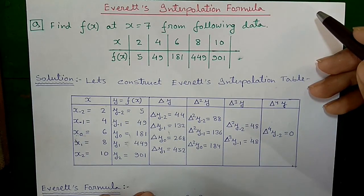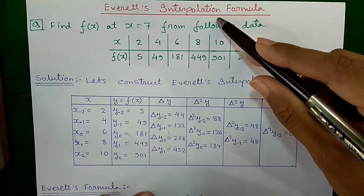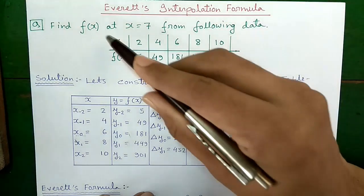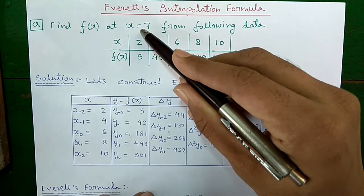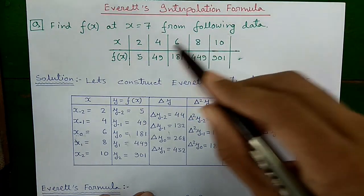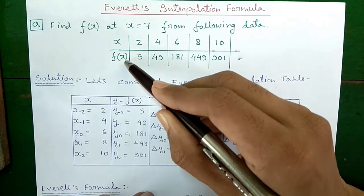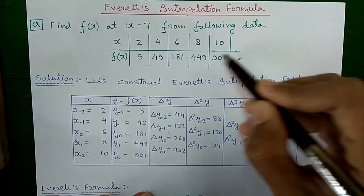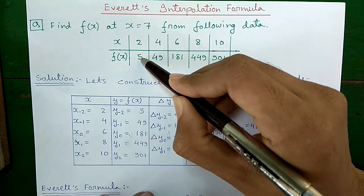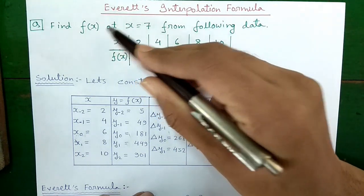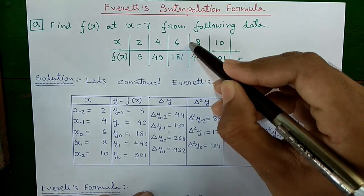Hi, I am Sujoy and today I will show you how to do Everett interpolation easily. The question is: find f of x at x equal to 7 from the following data. Some x values are given with corresponding f of x values. When x equals 2, f of x is 5. We have to find f of x at x equal to 7, and 7 is not in the table.